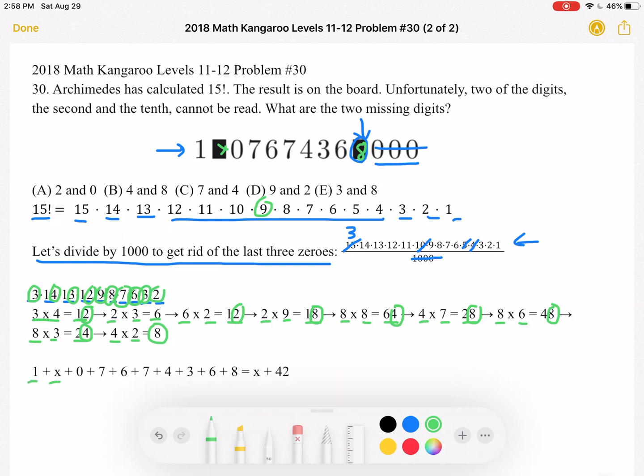We have 1 plus x plus 0 plus 7 plus 6 plus 7 plus 4 plus 3 plus 6 plus 8, and that's equal to x plus 42. And again, this must be a multiple of 9.